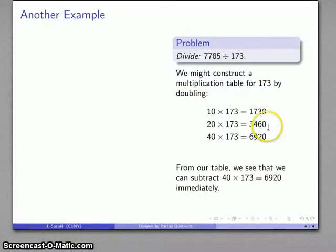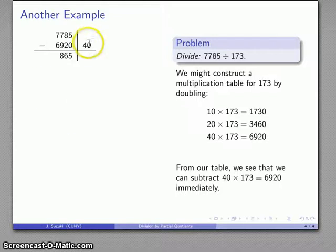But here's the important thing. I can definitely subtract 40 173s immediately. Because 40 173s is a good deal less than what I'm starting with. So I'll subtract out that 40 173s right away. I have 865 left. And the nice thing about this is I've already constructed a partial multiplication table for 173. Of course, these are the 10s, but the difference between the 10s and the 1s is just that extra 0 that I've added there.